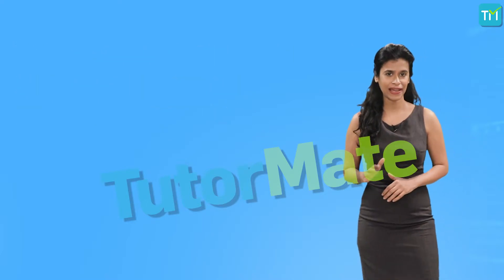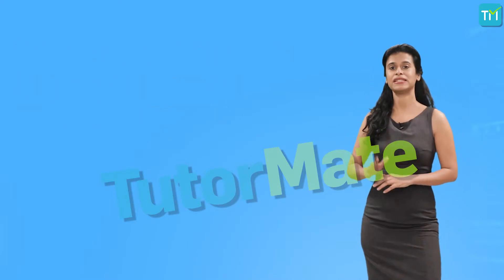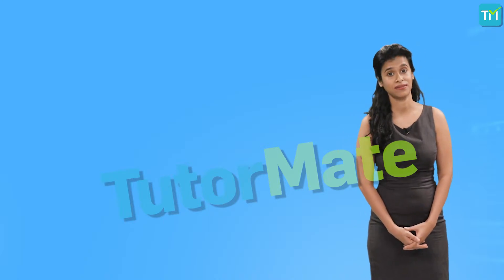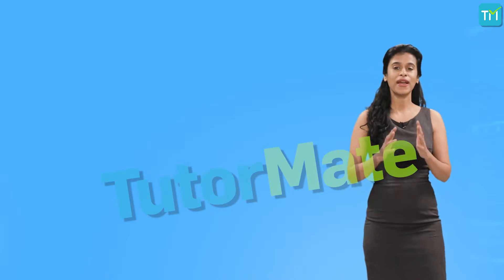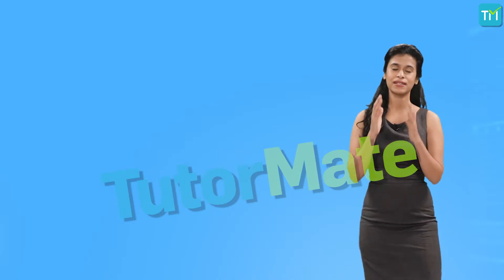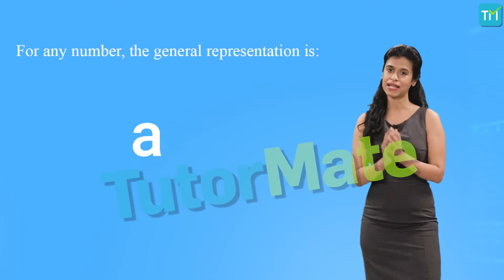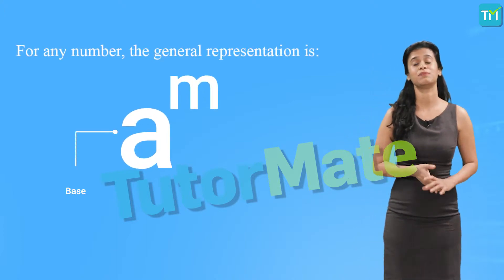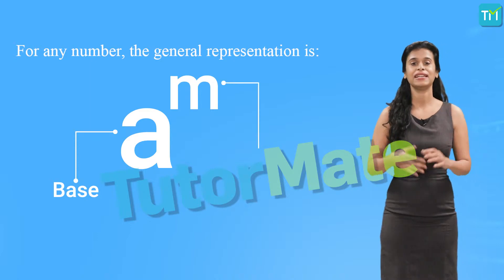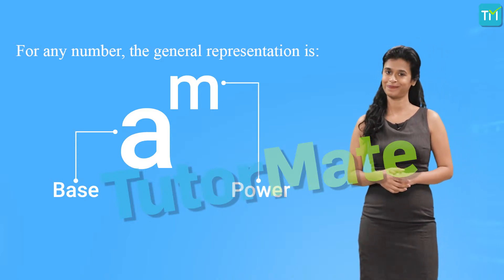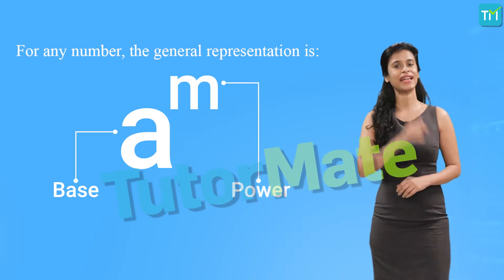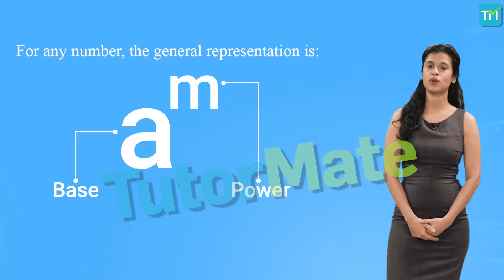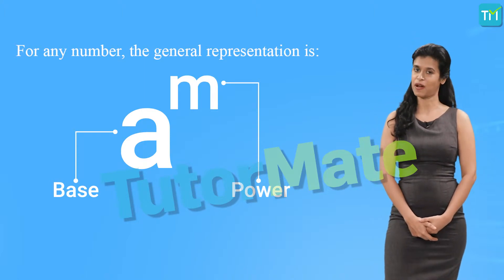Do you see what we did there? We basically removed the zeros and expressed them in powers of 10. So whenever we express a number as a raised to m, it means that the base is a and the exponent is m.